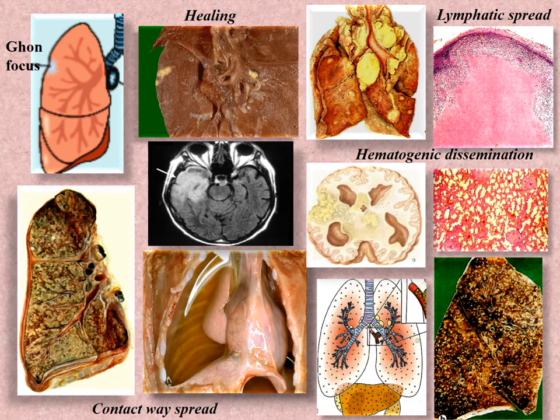TB may remain in foci even after scarring, and further forms of tuberculosis will originate from them. Such a focus in the lung is called the Simon focus, which can be localized in the pulmonary apex. The canalicular way is the spreading of tuberculosis through anatomic channels — for example, the spreading of caseous material through the bronchial tree to other parts of the lung. The mixed form involves all dissemination routes and usually occurs in extremely debilitated patients.